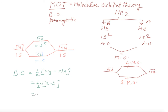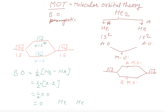The bond order comes out to be zero, which means helium and helium have no bond — He₂ does not form. Also, all electrons are paired, whether in bonding or anti-bonding orbitals, so there is no paramagnetism. Next, we'll take the example of nitrogen.